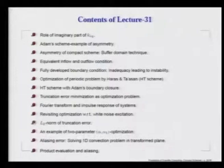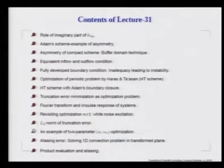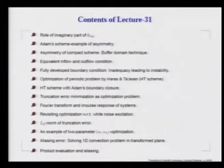Having defined the mean square error through this norm, we can develop an example, introducing the optimization problem as a two-parameter problem, which will use the grid search technique in identifying the optimum values of these two parameters. This will basically conclude our discussion on developing optimum schemes for compact scheme methodologies. We also highlight another source of error not covered above, namely the aliasing error, which happens whenever we include product evaluation either in the transform plane as a linear or non-linear equation.